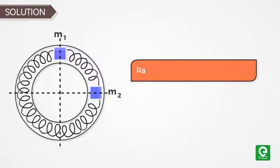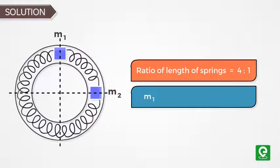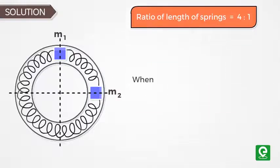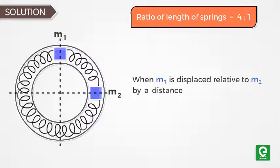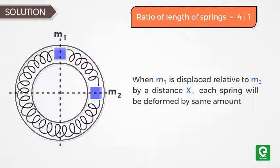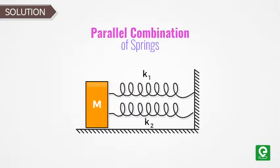Solution: We are given ratios of the length of springs is equal to 4:1, mass m1 = m and mass m2 = 3m. When m1 is displaced relative to m2 by distance x, each spring will be deformed by same amount.